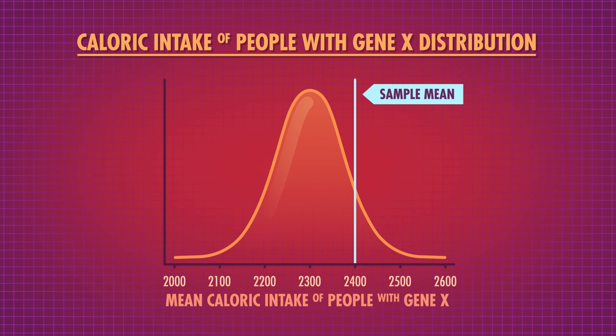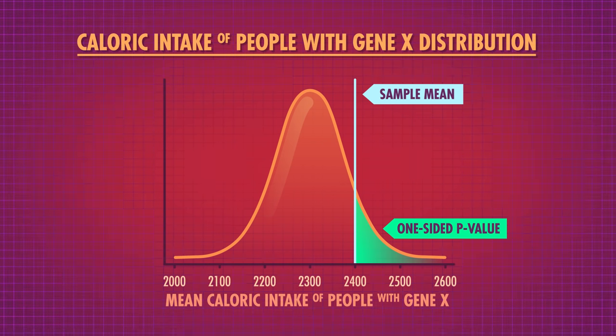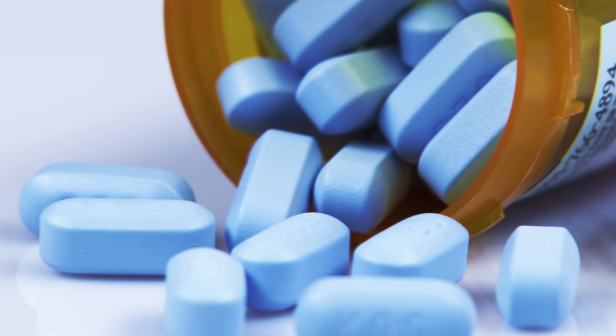Our sample mean of 2400 sits on this distribution, and only about 8.99% of possible sample means are higher than 2400. So it's not that unlikely to get this high a sample mean if the true population mean were 2300 calories. This is called a one-sided p-value, since it only tells us the probability of getting a sample mean higher than 2400. Often in scientific questions — like whether a medicine has different efficacy — we don't know which direction the effect will be in; the new medicine might be better or worse, GeneXers might eat more or less.